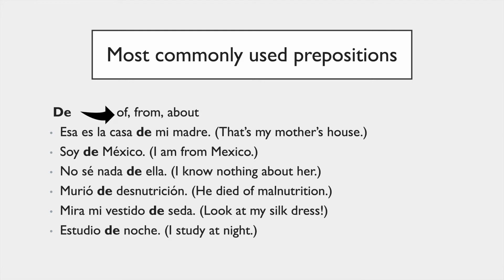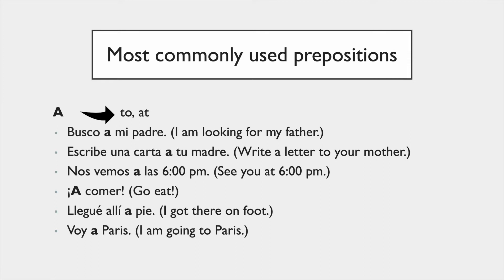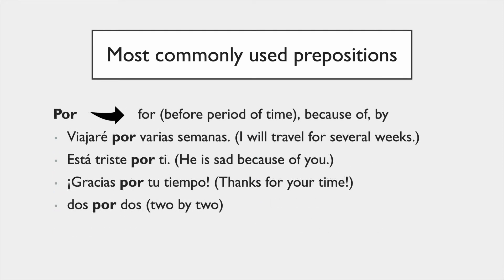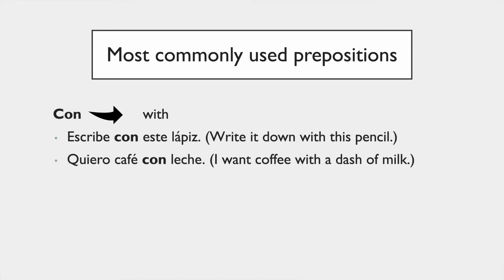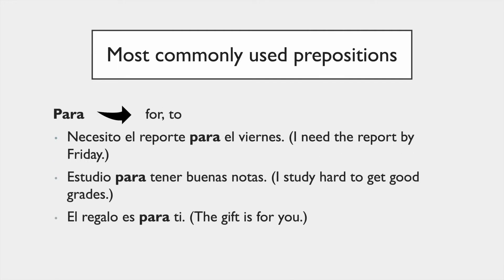'A' means 'to' and 'at'. 'En' means 'in', 'on', and 'at'. 'Por' means 'for' when you talk about time, 'because of', or 'by'. 'Con' means 'with'. 'Para' means 'for' or 'to', especially before a verb.